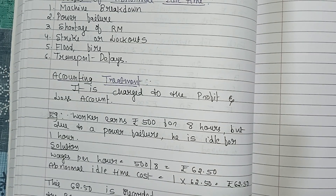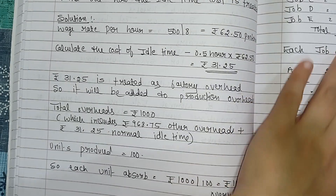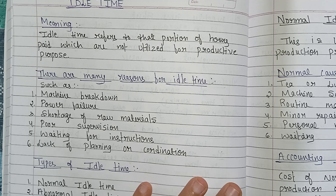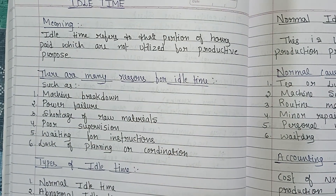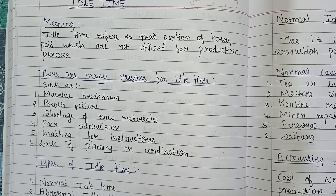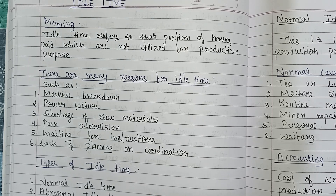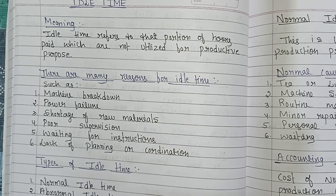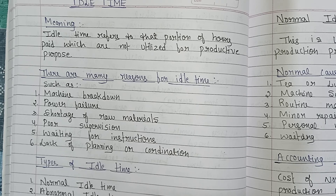It is recorded as a loss because abnormal idle time is unplanned, unexpected, and avoidable — it does not contribute to production but still costs money. So idle time refers to the time for which workers are paid but no production work is actually done. There are mainly two types: normal idle time and abnormal idle time. I hope this concept is clear to you all — if not, please leave a comment. Thank you.